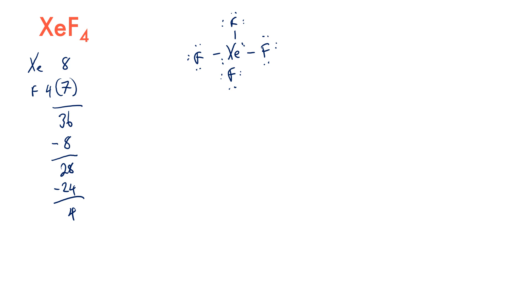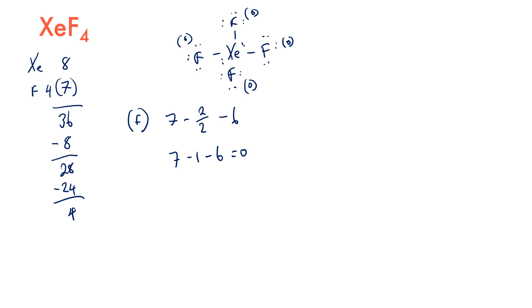We calculate the formal charges on each atom. For fluorine: group number 7 minus 2/2 (bonding electrons) minus 6 (lone pairs) gives 7 minus 1 minus 6, which equals 0. So each fluorine is 0. For xenon: group number 8 minus 8/2 (bonding electrons) minus 4 (lone pair electrons) gives 8 minus 4 minus 4 equals 0. So xenon is also 0.